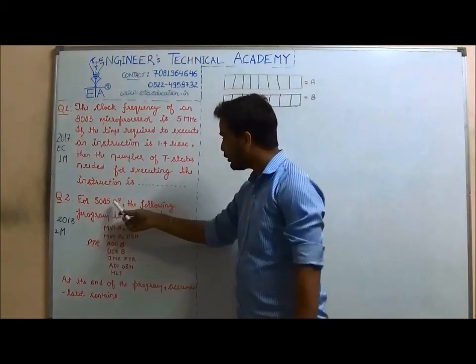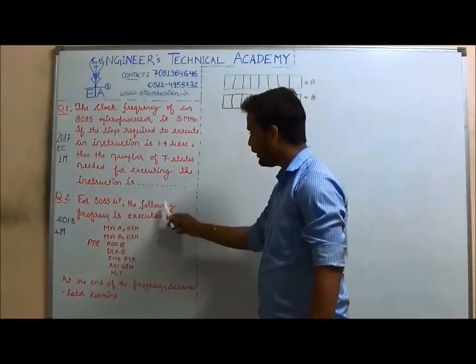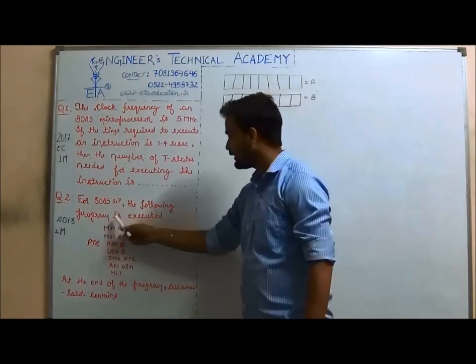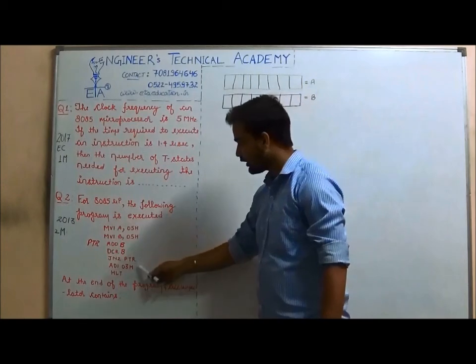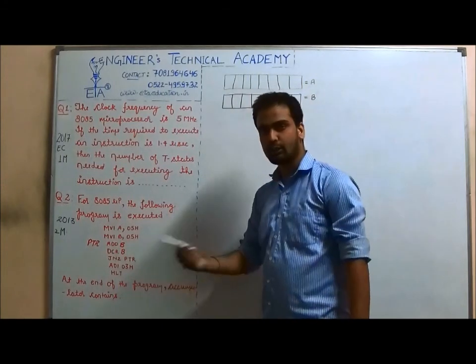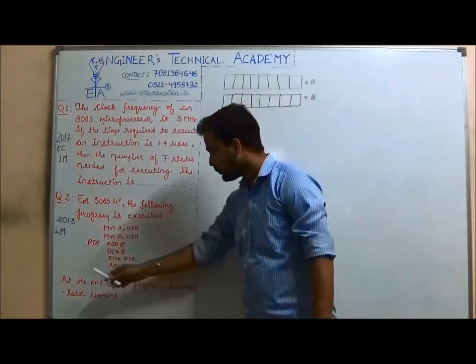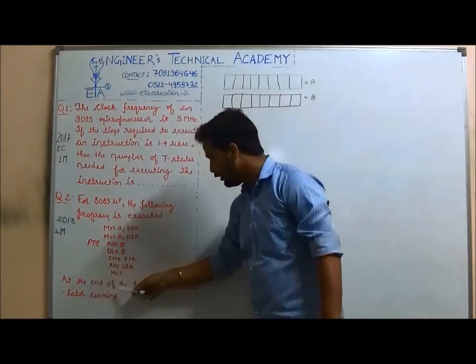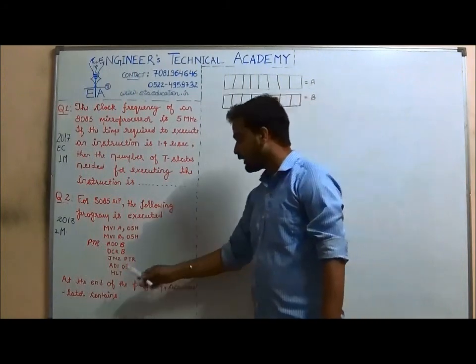It says: for an 8085 microprocessor, the following program is executed. These are the instructions that are executed on an 8085 microprocessor, and at the end of the program, the accumulator contains?